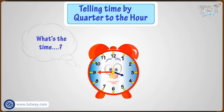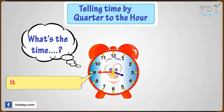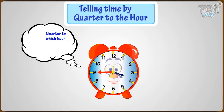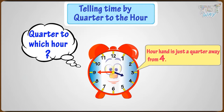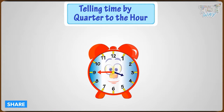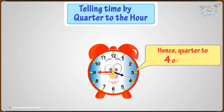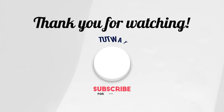Now let's figure out the time in this analog clock. The minute hand is pointing at 9, so it's quarter to the hour. But quarter to which hour? The hour hand is just a quarter away from 4, so it's quarter to four. If the minute hand moves round one more quarter, it will be four o'clock. Also, the hour hand is pointing three-fourths of the way past the current hour — see the dotted line. Hence, quarter to four, or three forty-five.